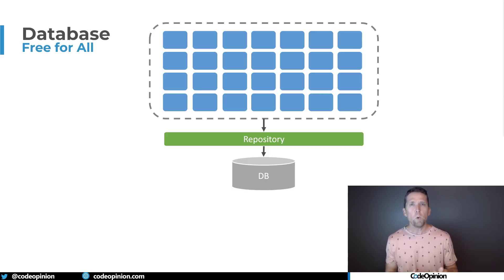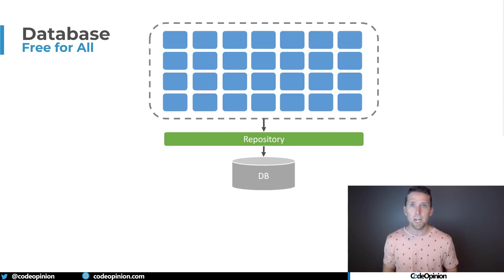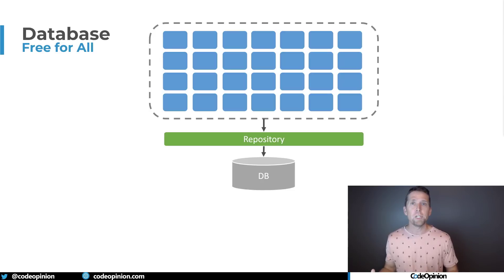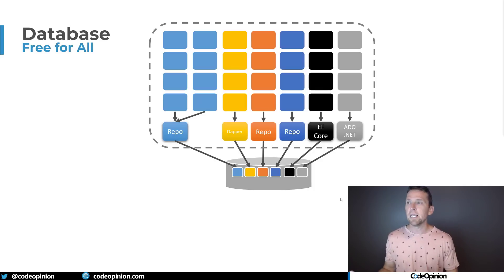So it segregates all that data access code. But really, what's the issue? Do you actually need that abstraction, or is the real need to limit coupling? All this code, instead of being coupled to your database, is now just coupled to your repository. The real problem isn't that you need a repository — it's that you need to limit coupling. You need to segregate your application into different boundaries, and then decide within each boundary how you want to do data access and whether you even need a repository in that context.